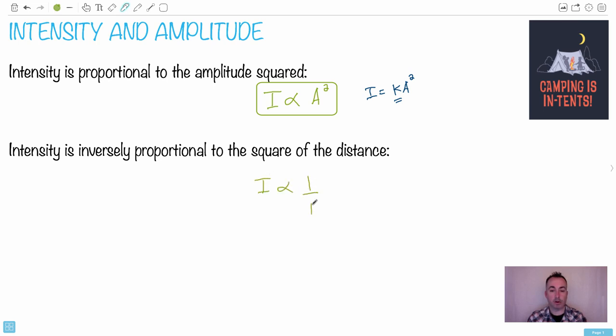So it's I is proportional to 1 over r squared, usually 1 over 4πr² but we can just write it like this. This here is also an important one. This is all you need really for intensity and amplitude for IB questions.